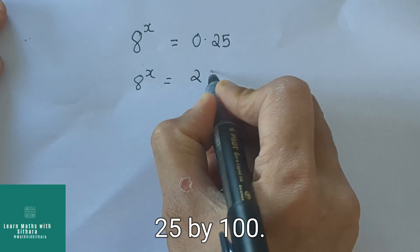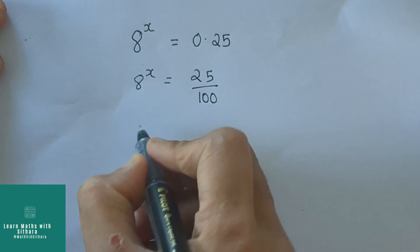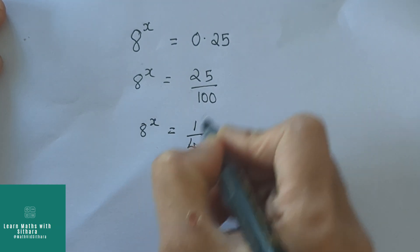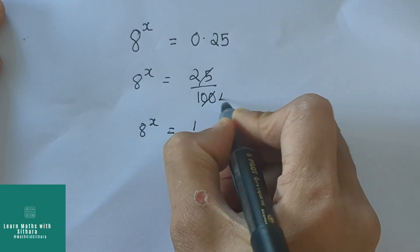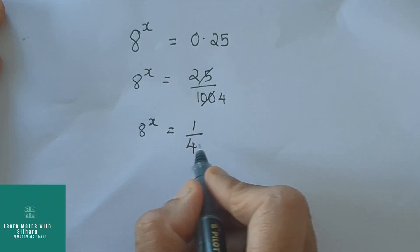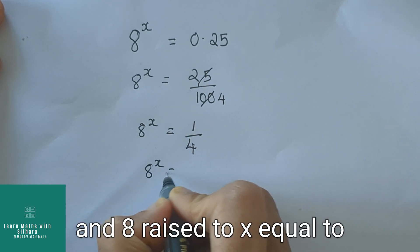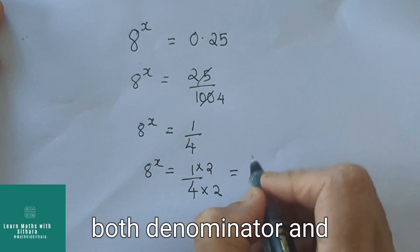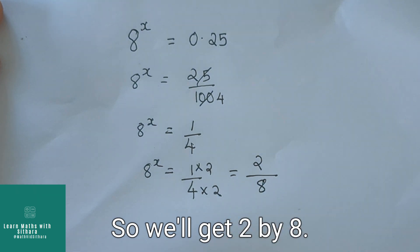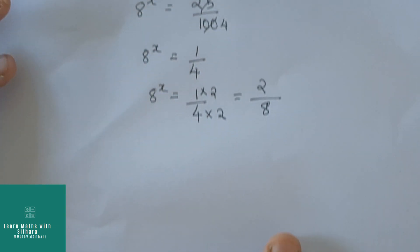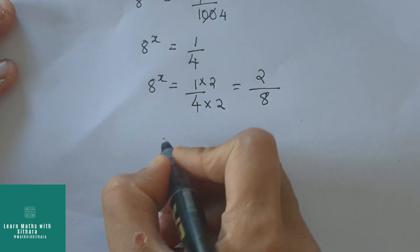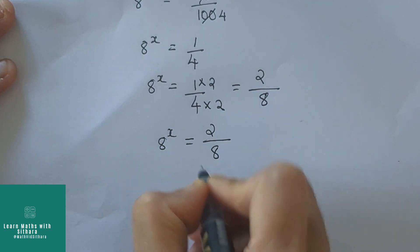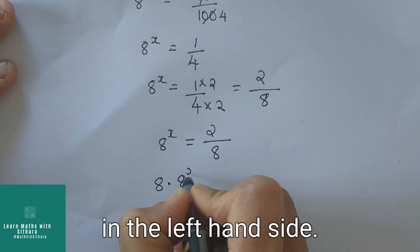8 raised to x equal to 0.25 can be written as 25 by 100, so 8 raised to x equal to 1 by 4. And 8 raised to x equal to 1 by 4 can be multiplied both numerator and denominator by 2, so we'll get 2 by 8. So 8 raised to x equal to 2 by 8.